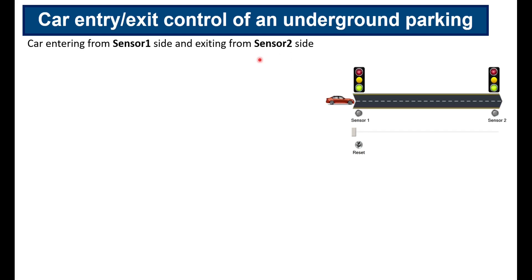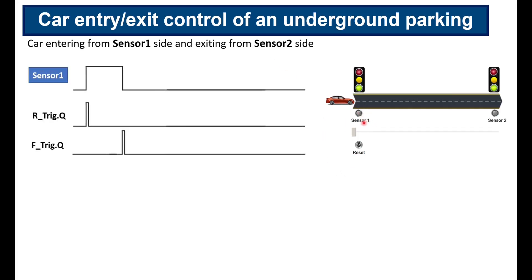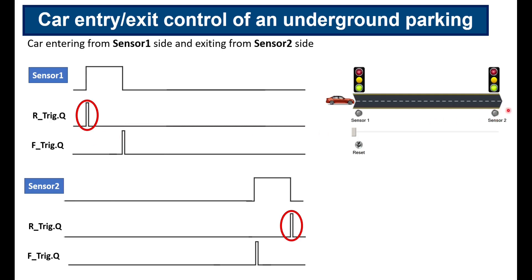These are the cases we will have. When a car enters from the sensor one side and exits from the sensor two side: as the car enters and is in front of sensor one, the sensor value is true, and once the car moves away it returns to zero. Using R_TRIG and F_TRIG with sensor one we get two short pulses at those two moments. Similarly, when the car exits from the sensor two side, sensor two generates a signal and R_TRIG and F_TRIG produce two short pulses.